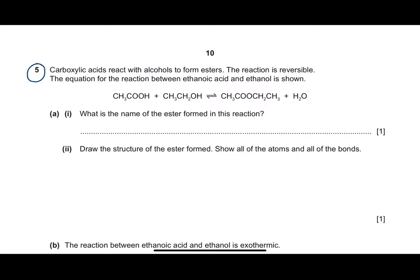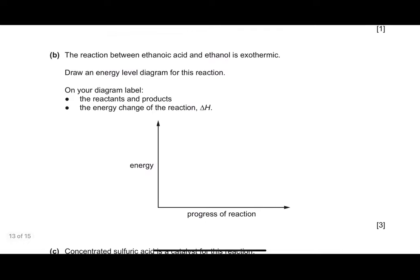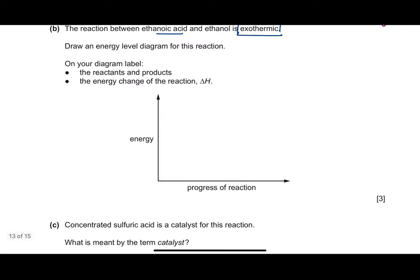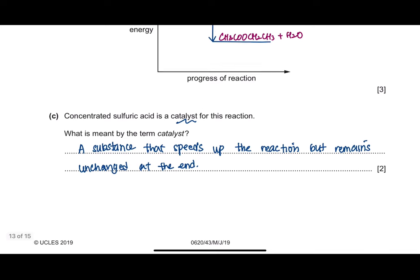This question is from May-June 2019, question 5. Part B states that the reaction between ethanoic acid and ethanol is exothermic, meaning it releases heat energy. You are asked to draw an energy level diagram, labelling the reactants and products and the energy change. For an exothermic reaction, the energy change is negative. Part C states that concentrated sulfuric acid is a catalyst for this reaction, and again asks: what is meant by the term catalyst? A substance that speeds up the reaction but remains unchanged at the end.